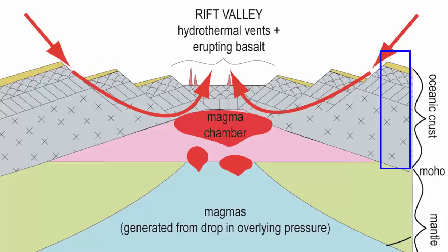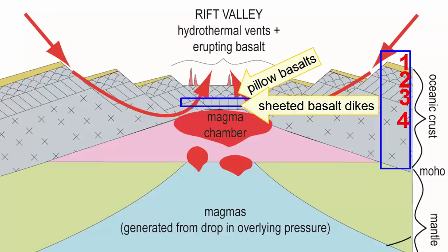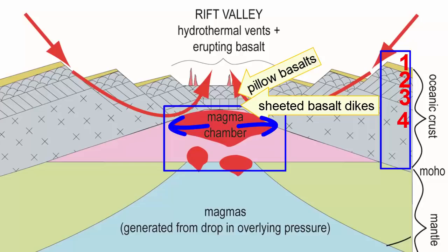The new ocean crust that forms at these ocean ridges consists of four main layers. The magma that erupts on the seafloor cools quickly under high-pressure, cold water, and forms structures that look similar to hardened toothpaste squirted out of a tube—they're called pillow basalts. The cracks in the crust that fed the magmas to the surface cool to form vertical walls of basalt called sheeted basalt dikes. The chambers that hold the magmas under these ridges will also spread, and as their outer edges cool, they crystallize slowly to form a larger crystal rock with the same composition as basalt, but now called gabbro.